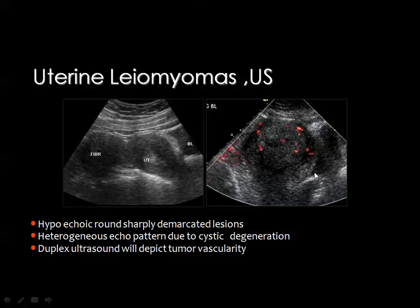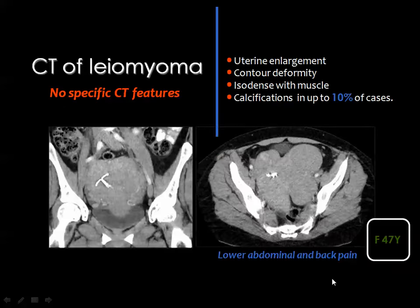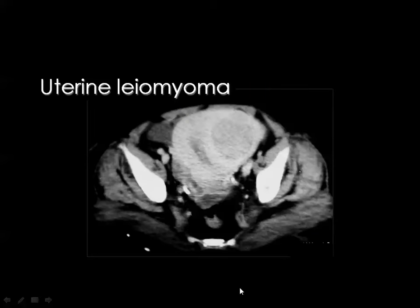By ultrasound, fibroid appears hypoechoic and Doppler shows vascularity within the mass. By CT, there is a lobulated mass of similar density to the uterine muscle, which may be small or large and usually contains calcification in up to 10% of cases. On CT, the fibroid is of similar density and enhancement to the myometrium, but degenerative changes may make it appear somewhat hypodense or less enhancing.